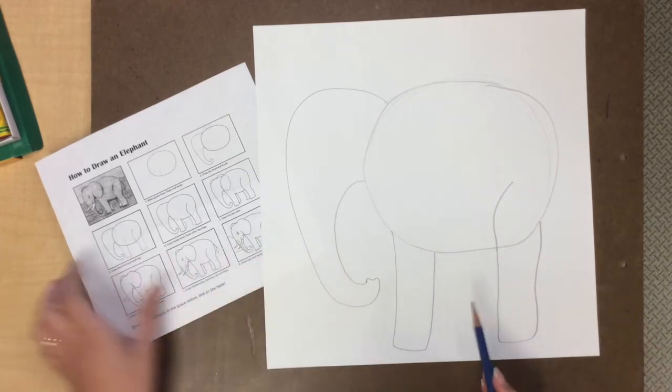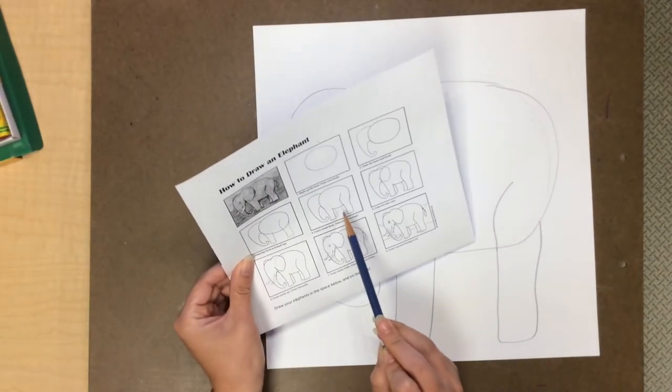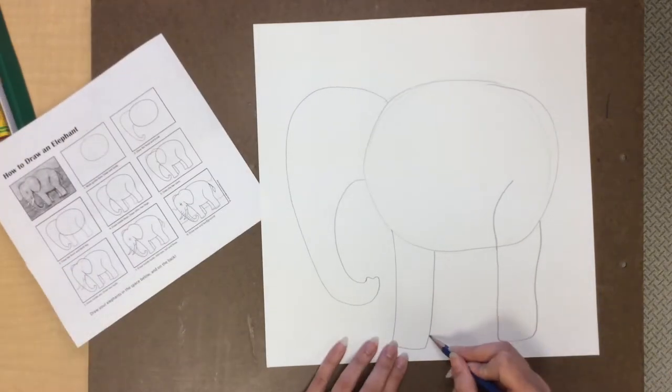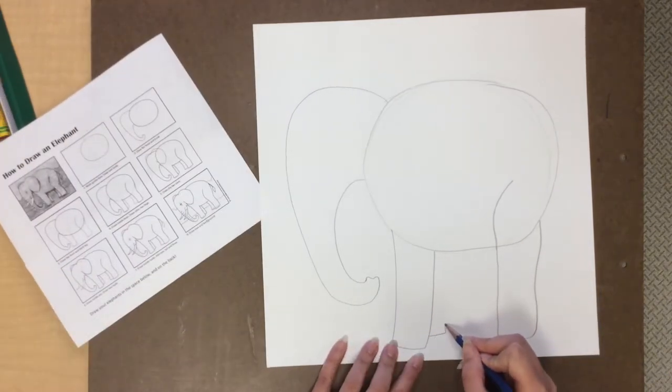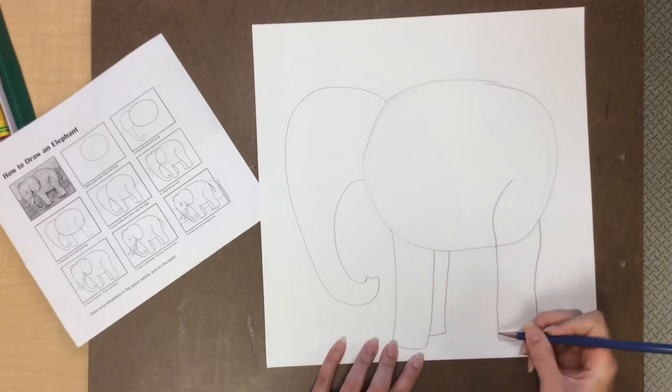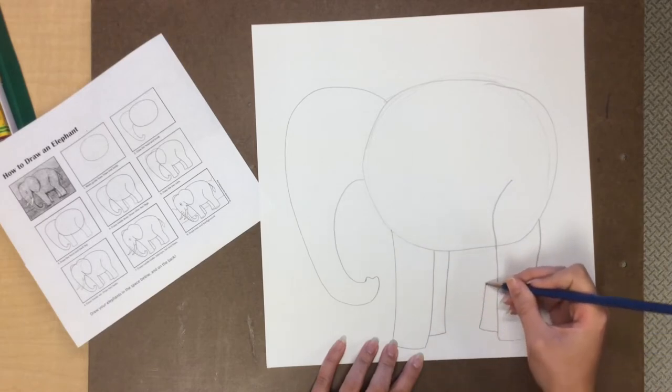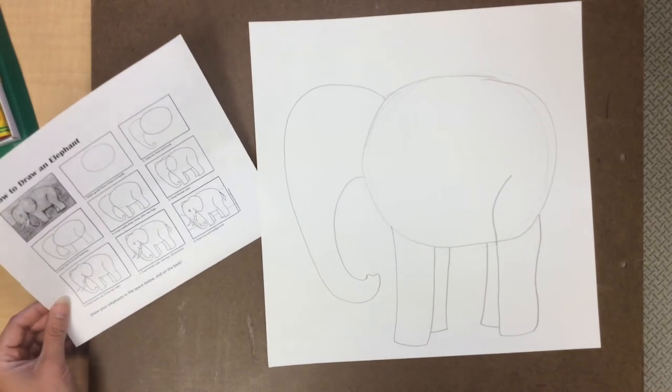Now the next step is we're going to draw the other two legs for a total of four and they're kind of just peeking out behind the first two legs. So you don't see very much of them. Just a little bit.